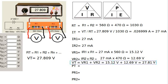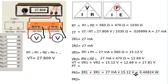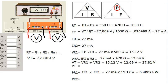Next we calculate power. The memory aid for the power formula is P equals I times E (P = IE). For resistor 1, power equals the current through R1 times the voltage across R1: 27 milliamperes times 15.12 volts equals 0.4082 watts. Converting to milliwatts by moving the decimal three places right gives us 408 milliwatts.